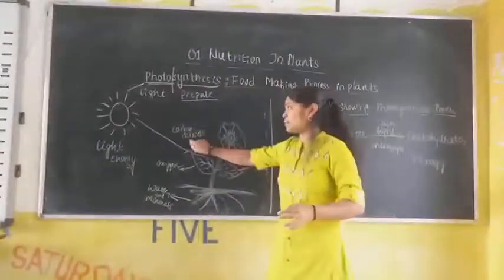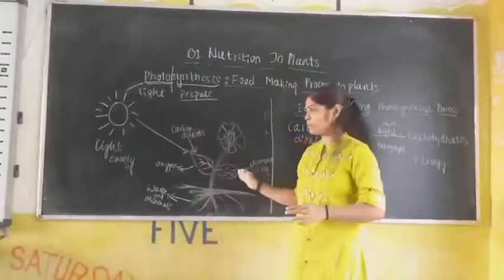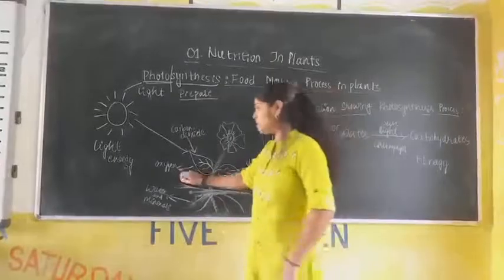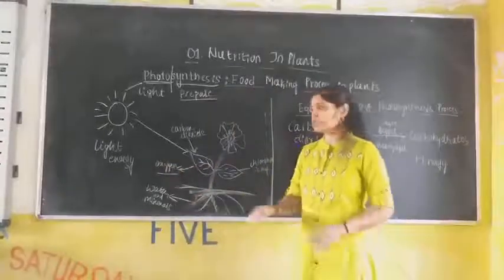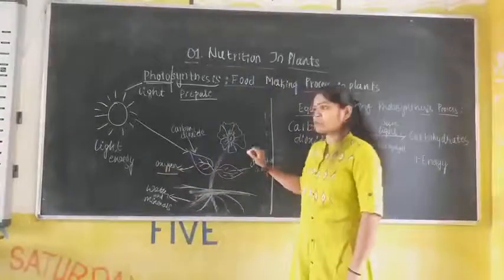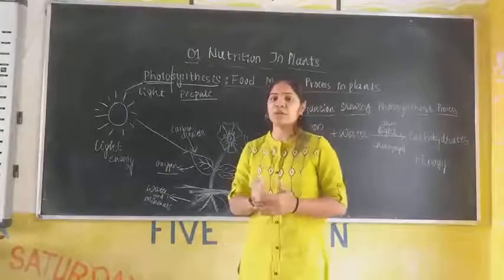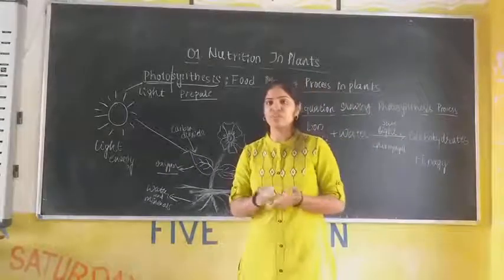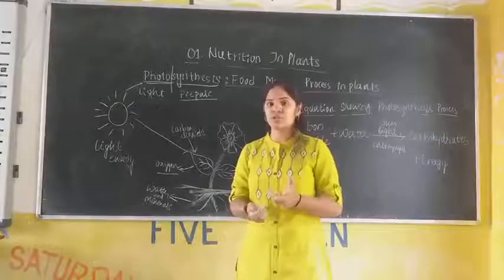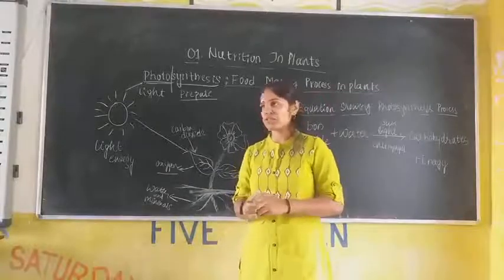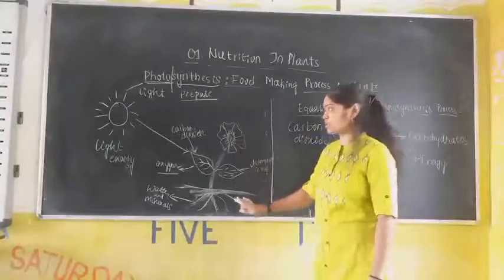The plants also absorb carbon dioxide and release oxygen, which is necessary for our body. We get this oxygen from the plants, which is released during the process of photosynthesis. This shows the photosynthesis process.